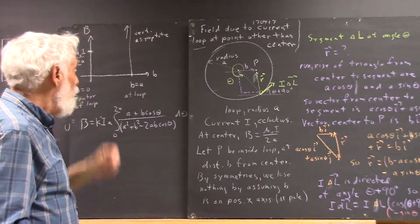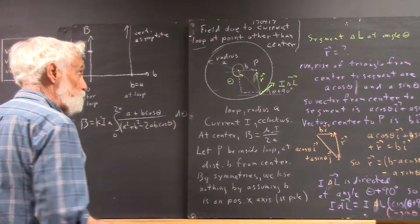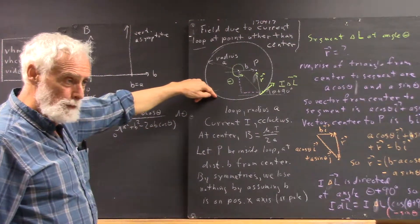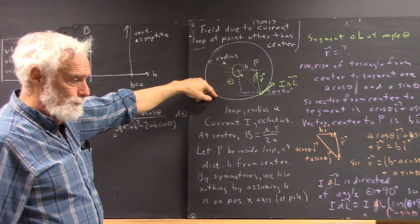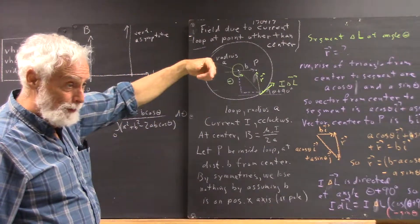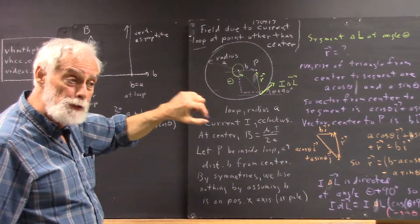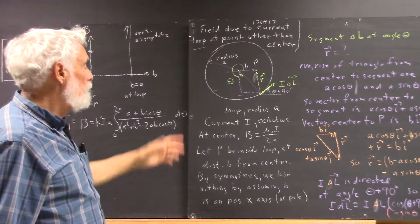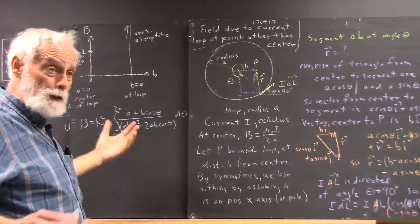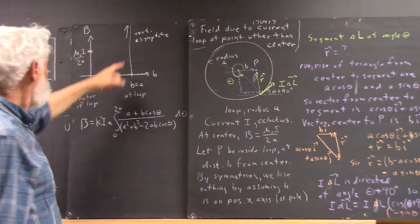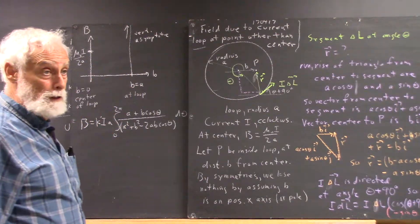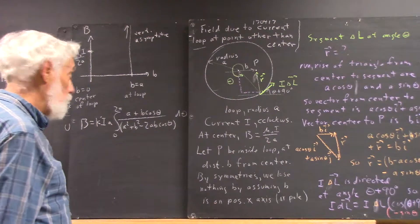Meaning that the current close to the loop is mu naught times I divided by 2 pi times your distance from the loop. Well, your distance from the loop is approaching zero, the magnetic field is going to approach infinity. So we have to have a vertical asymptote there, and if this integral doesn't give us that, we're kind of out of luck.